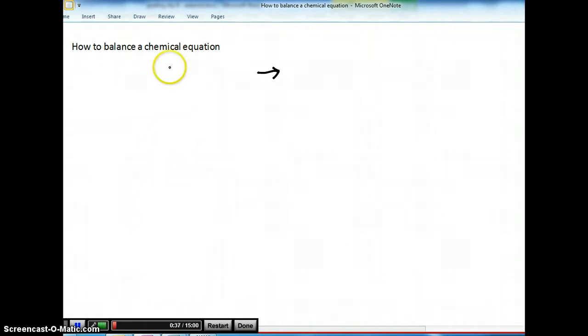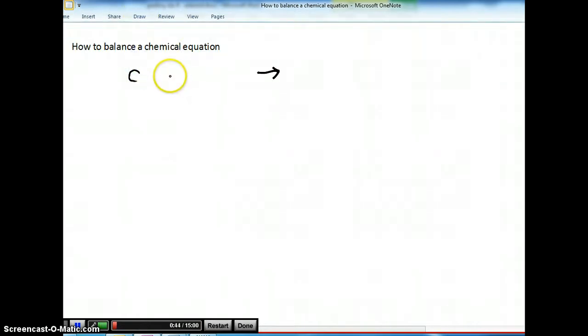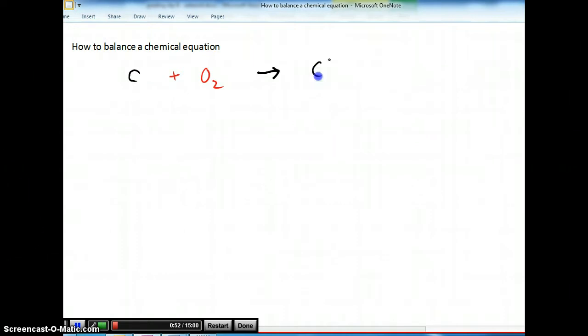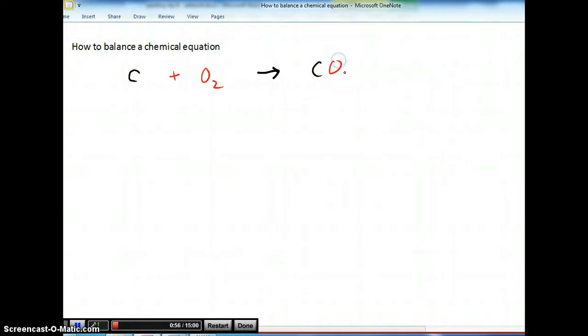So let's just take a simple one. Let's say if you have some carbon in red and in black, reacting with some oxygen gas, which is in red there, and you form carbon dioxide. Pretty simple.